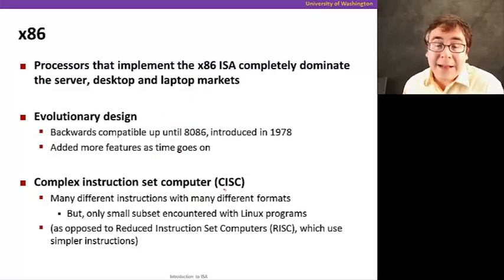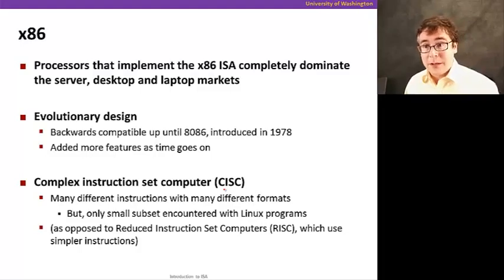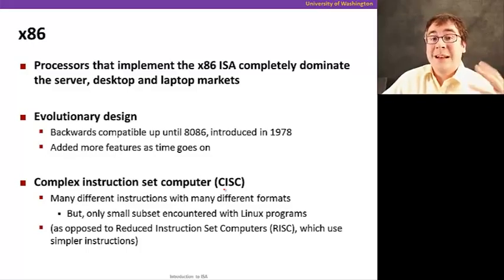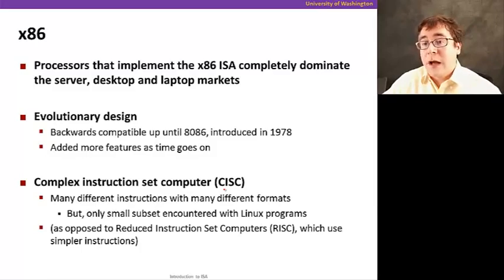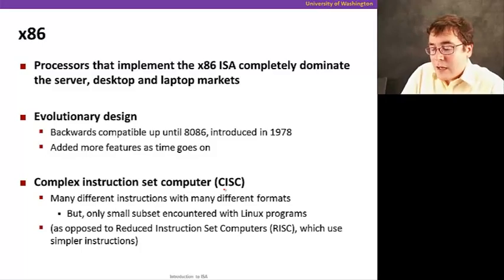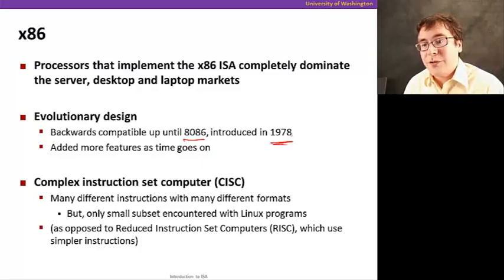So, now, x86 is one type of ISA. So, it's very, very popular. And in fact, it's so popular that x86, which is, you probably know, Intel, Intel Corporation makes x86 processors, or processors that implement x86 ISA. And these processors completely dominate the server desktop and laptop markets for now. And they actually had a very evolutionary design. Now, in fact, if you have code written for the 8086, all the way when it was designed in 1978, in fact, very close to when I was born. So, code written for the 8086 still runs in the most modern Intel x86 processors. It had very, very evolutionary design, and more features were added as time went on.